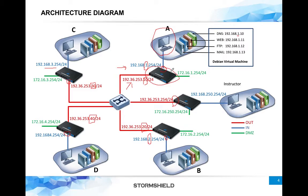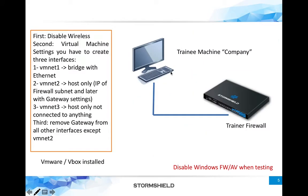We need to prepare our virtual environment to represent this architecture. Make sure you test your VMware or VirtualBox solution at least once beforehand, because sometimes the BIOS CPU virtualization settings are not enabled. Just test that you can run a virtual machine — install a Windows OS for example — to confirm it's working.